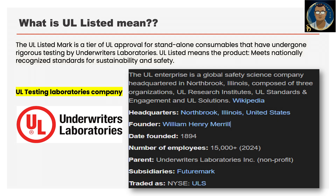You should have a question: what is UL listed? We have seen it even on power extension cords. UL — the full term is Underwriters Laboratories — is a testing laboratories company. The UL listed mark is a type of UL approval for standalone consumables that have undergone rigorous testing by Underwriters Laboratories. UL listed means the product meets nationally recognized standards for sustainability and safety. This enterprise is a global safety science company headquartered in Northbrook, Illinois, composed of three organizations: UL Research Institutes, UL Standards and Engagement, and UL Solutions. This information was collected from Wikipedia.